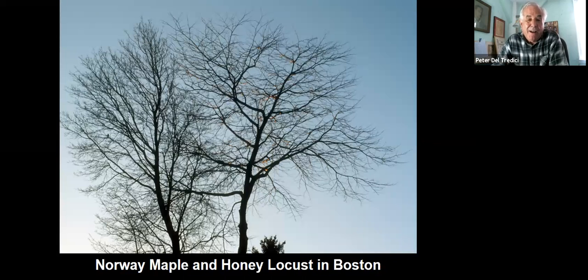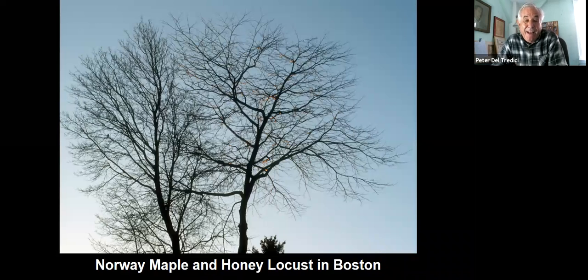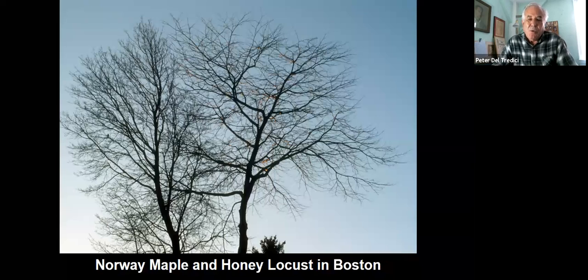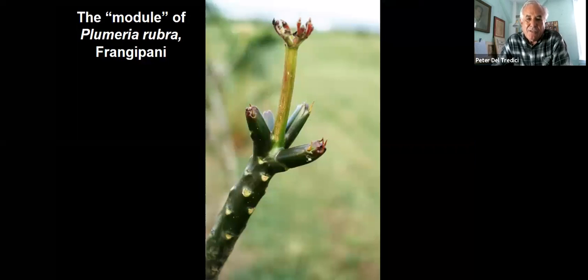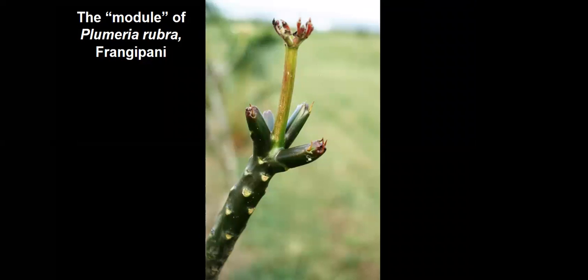Even in an urban context — I think I took this picture in Brighton — on the left there's a Norway maple, again a little bit like the sugar maple, which is an upright oval. And on the right is a honey locust, where the branches are more horizontal than vertical. In the leafless condition, you can begin to understand their branching patterns; they become much more obvious.